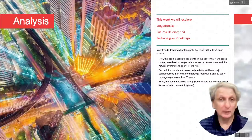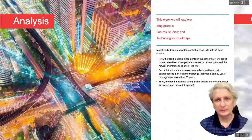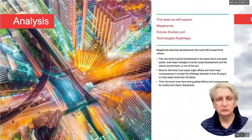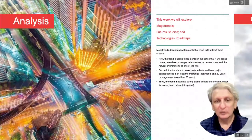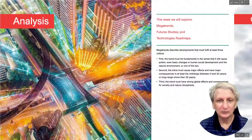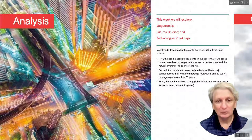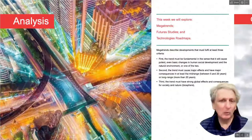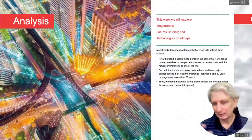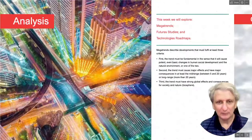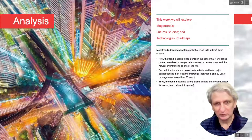The first concept is around what's called mega trends. These are large-scale trends that tend to be global and encompass the fundamental changes that are occurring. There are three main characteristics of a mega trend. The first is that it has to be significant or potent — a basic, fundamental change. The second is that it must have consequences in the mid-range, generally between five and twenty years. The third is that it needs to have global consequences.